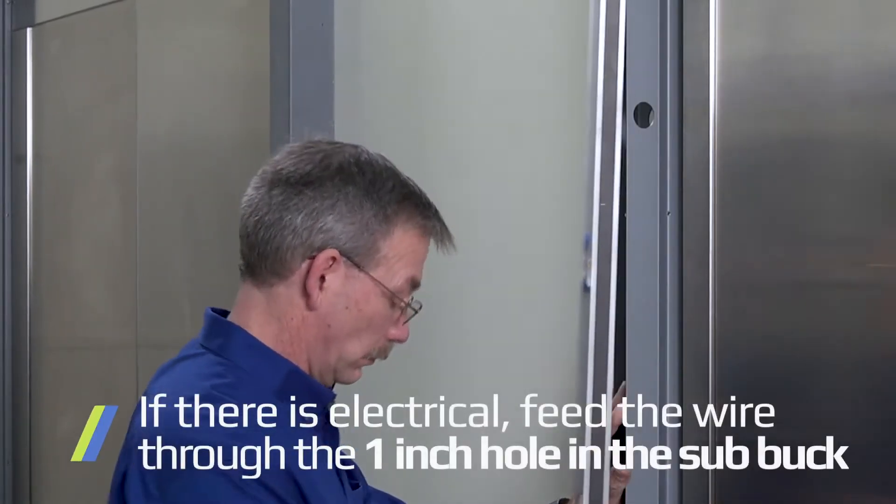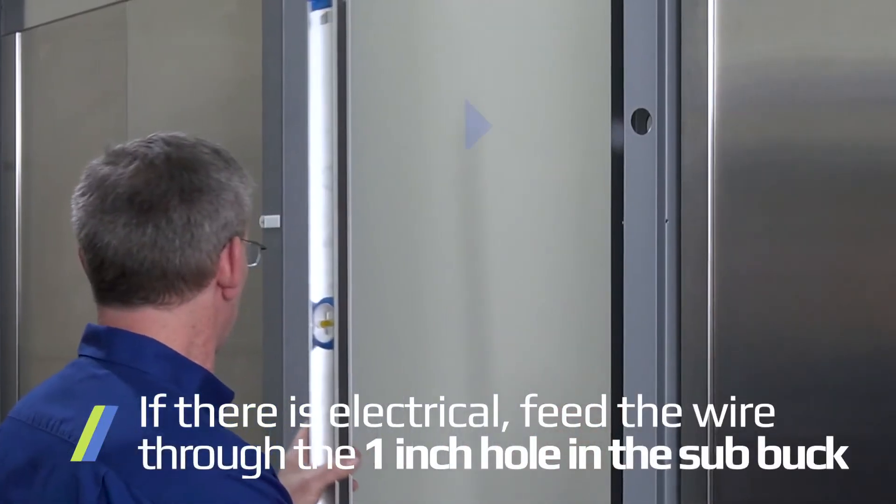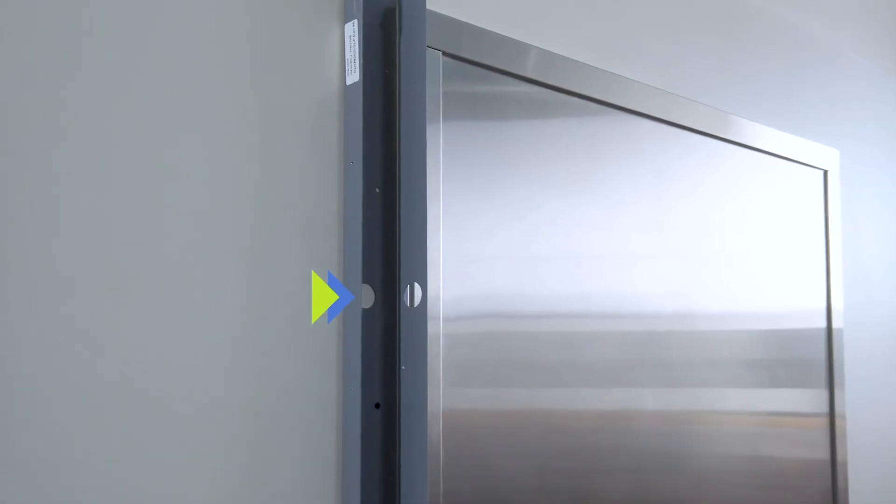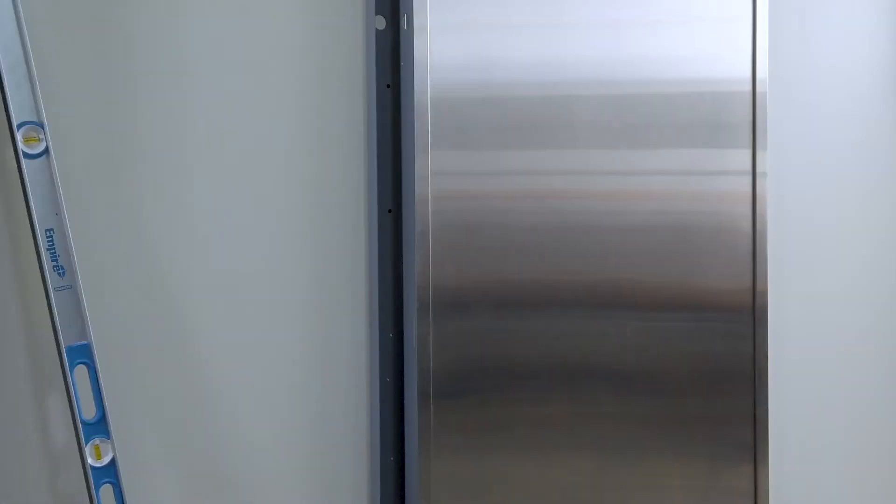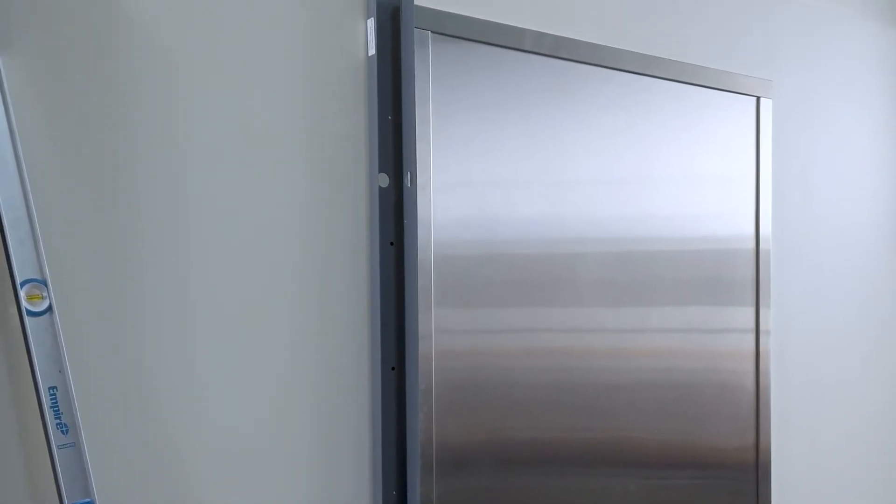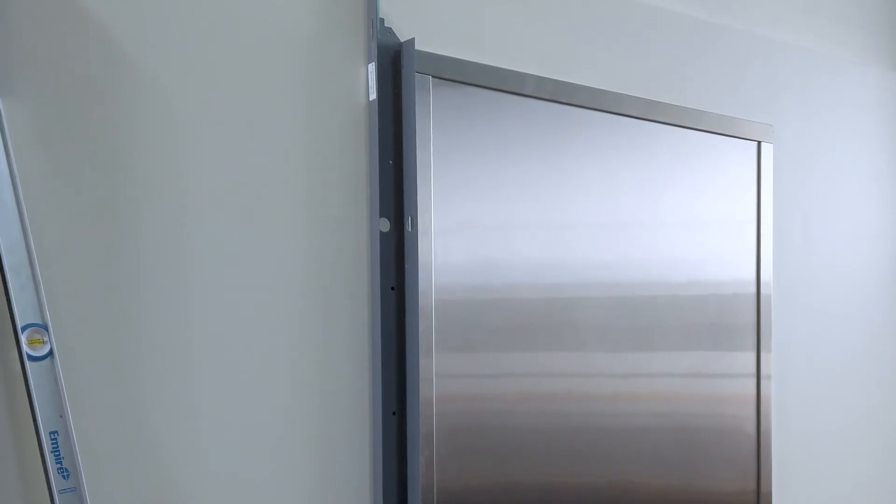If there is electrical, feed the wire through the one inch hole in the sub buck. Be careful not to pinch the wire under the sub buck. As each sub buck piece follows this first sub buck, a mistake here will result in the entire process requiring adjustments.